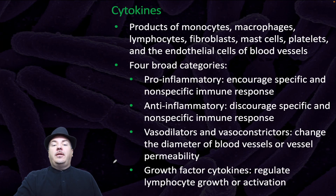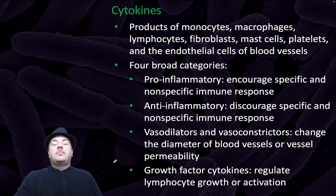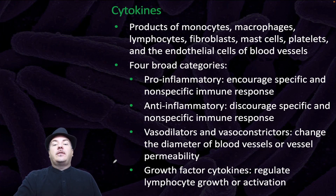Cytokines are products of monocytes, macrophages, lymphocytes, fibroblasts, mast cells, platelets, and the endothelial cells of blood vessels. Four broad categories include: pro-inflammatory, which encourage specific and nonspecific immune response; anti-inflammatory, which discourage specific and nonspecific immune response; vasodilators and vasoconstrictors, which change the diameter of blood vessels or vessel permeability; and growth factor cytokines, which regulate lymphocyte growth or activation.